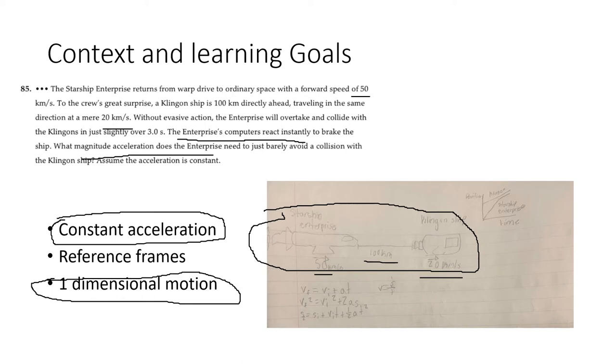These are the equations we can use for constant acceleration. A position versus time graph would look like this. The Klingon ship starts at a higher position and goes at a constant rate, so that's a straight line.